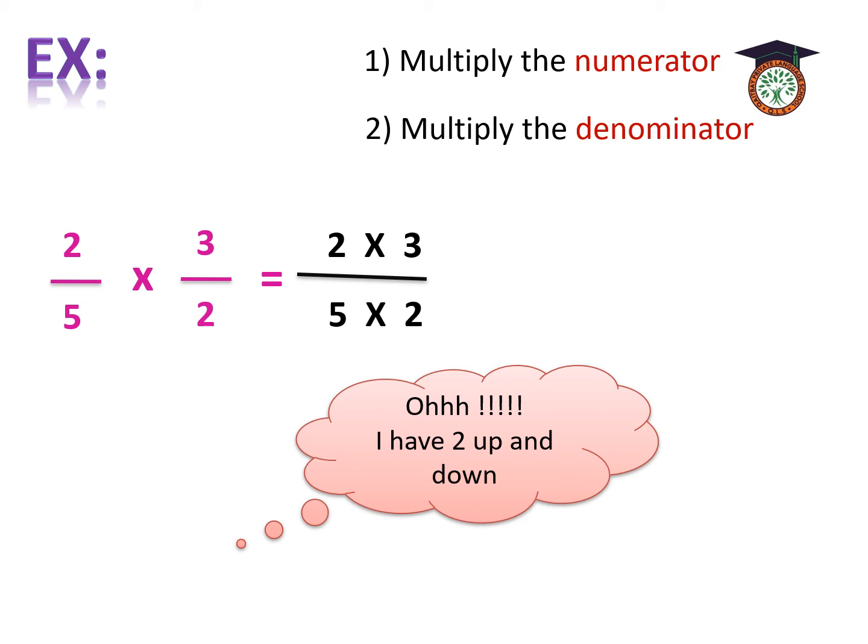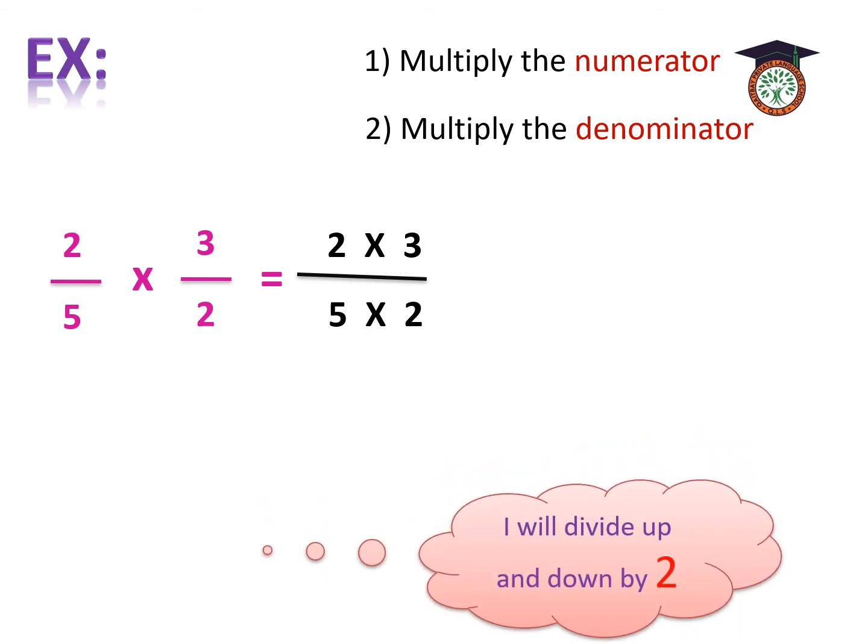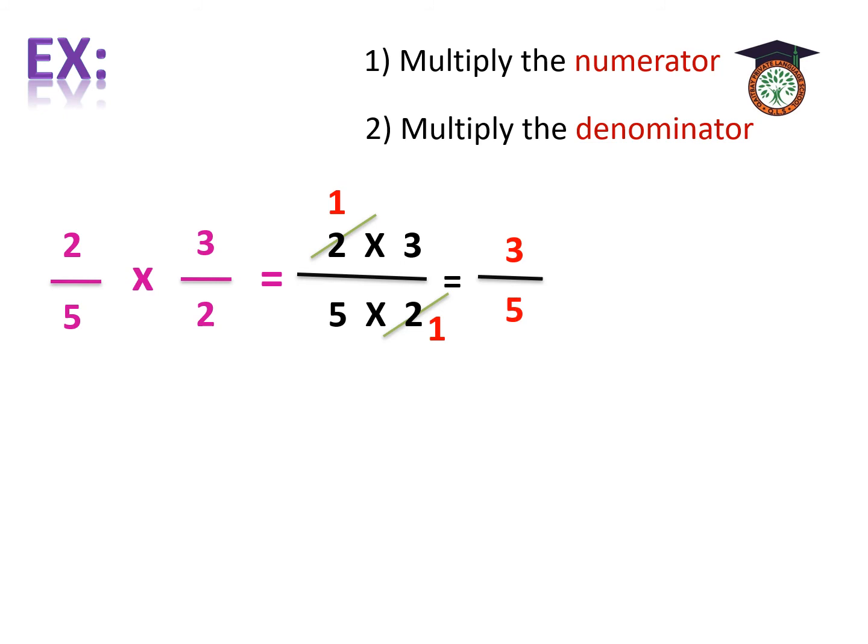I will divide up and down by 2 to cross number 2. So, 2 divided by 2 equals 1, 2 divided by 2 equals 1. So, the answer: 1 times 3 equals 3. 5 times 1 equals 5.